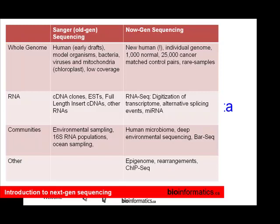Bar-Seq has nothing to do with drinking — it's a barcoding system. In yeast, the 6,000 genes have been barcoded, so you can have 6,000 different yeast strains in a test tube, throw different treatments at them, see which ones survive, then sample the DNA and see which ones are still alive by doing next-gen sequencing of the barcodes.